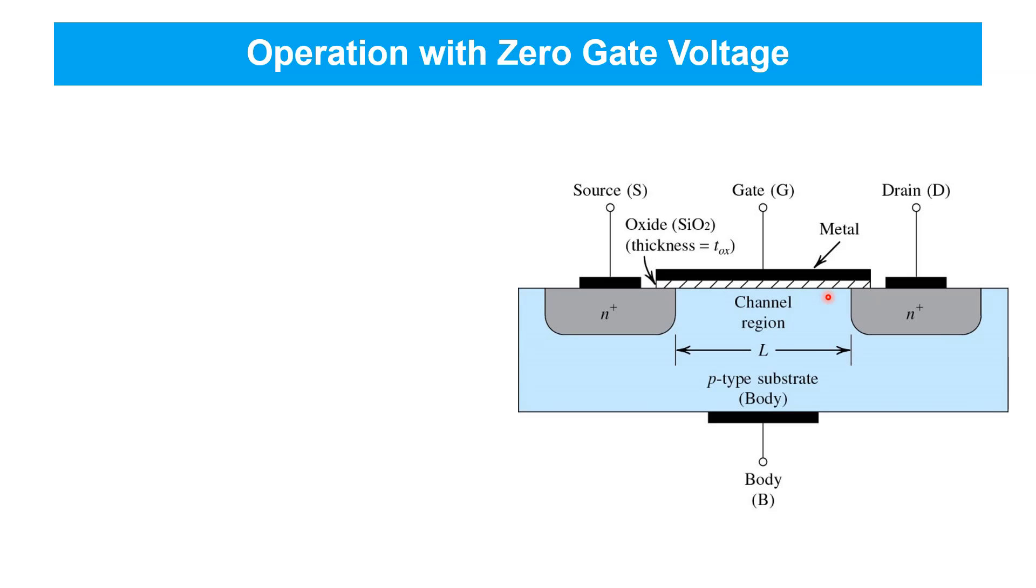The distance between source and drain is called the channel length, and is represented by the symbol L. Typical values for L might be in the range of a few nanometers up to a few micrometers.